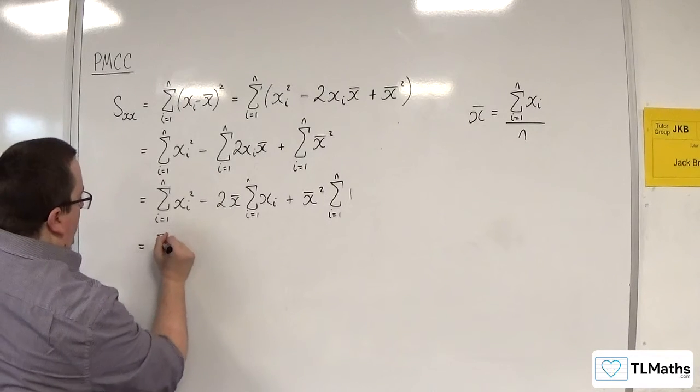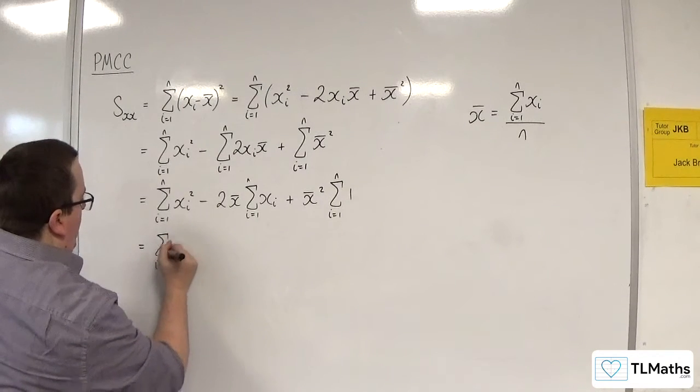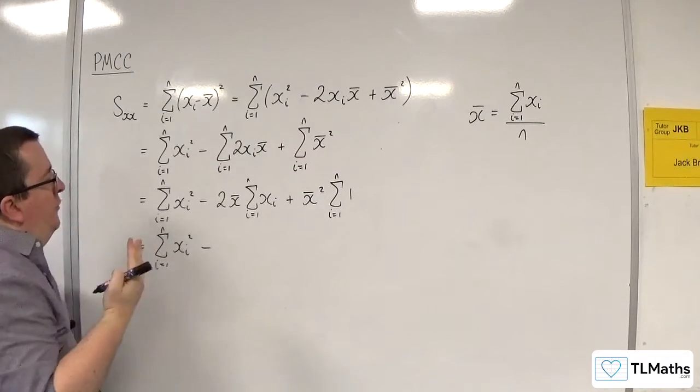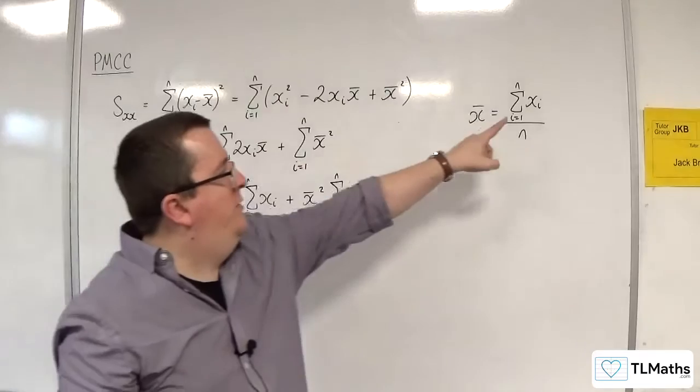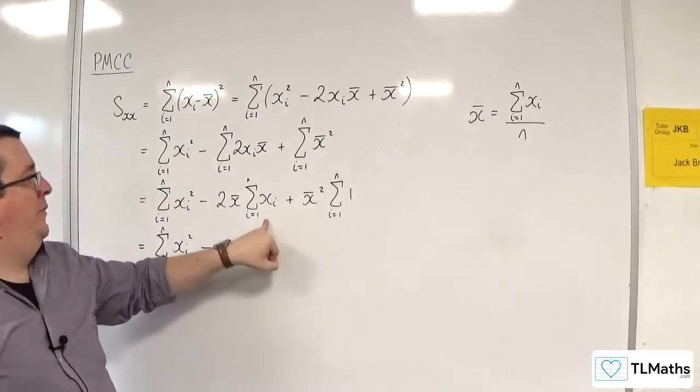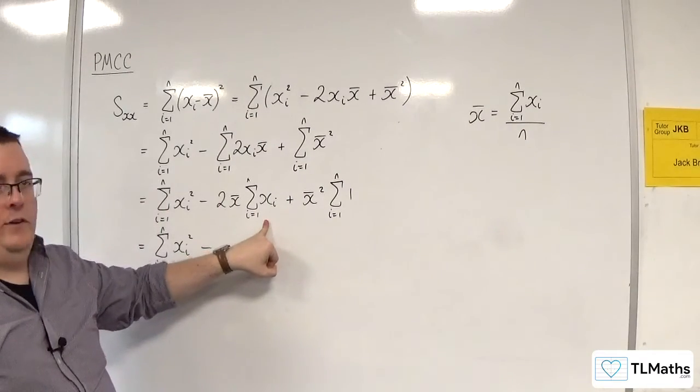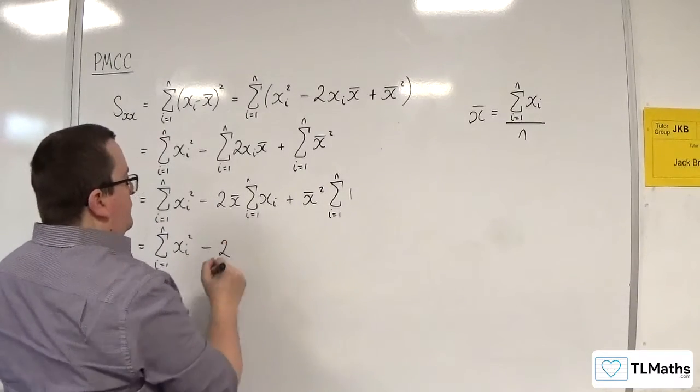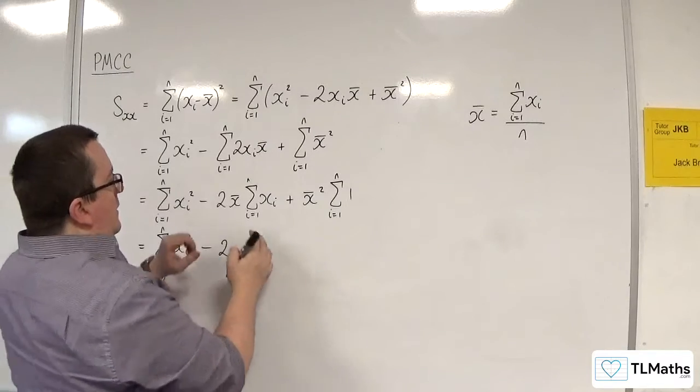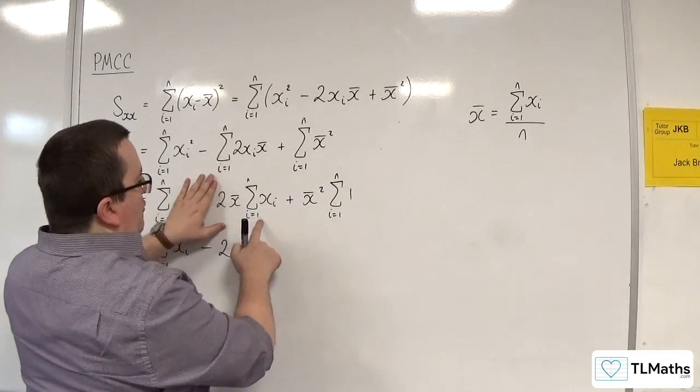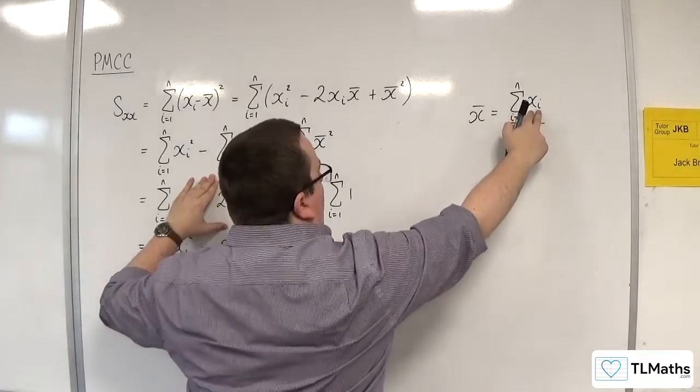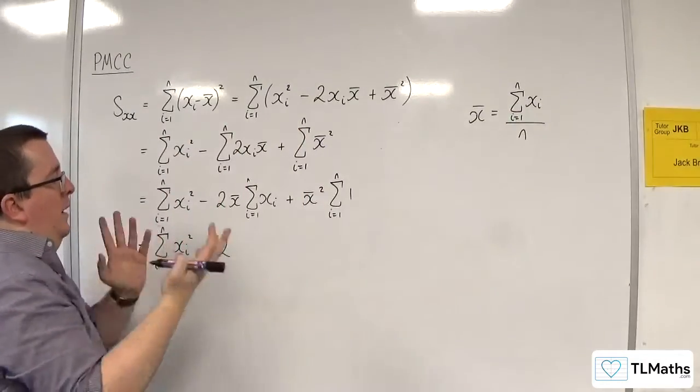So we've got the sum from i is 1 to n of XI squared. Then we've got 2 times that times the sum of XI from i is 1 to n. So I'm going to have 2 times the sum from i is 1 to n of XI times the sum from i is 1 to n of XI. So I've got that squared over n.